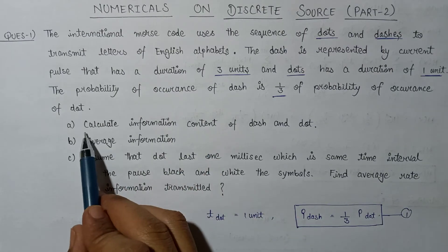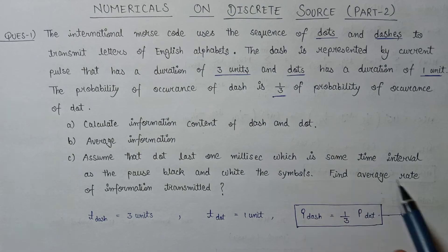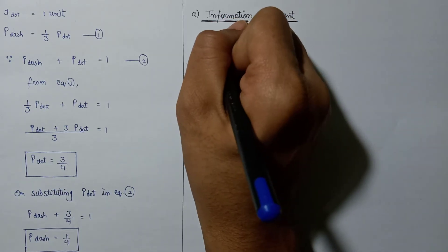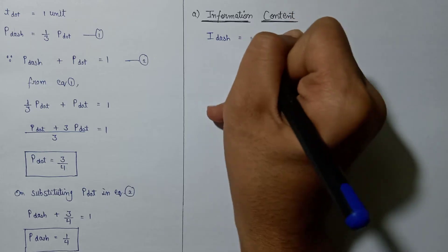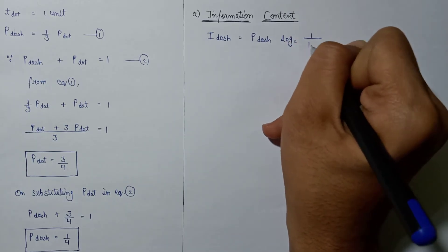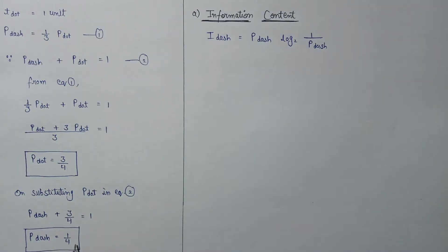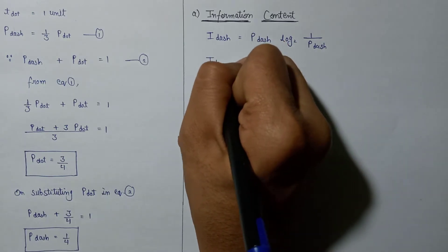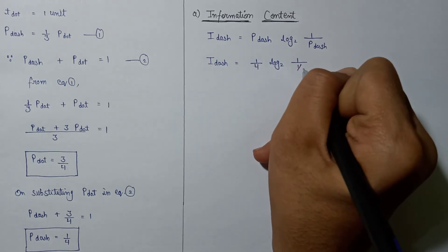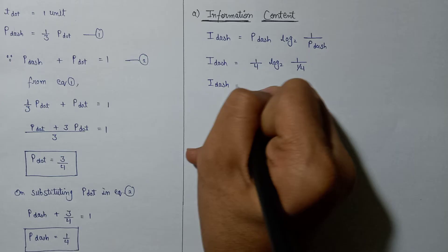Now for Part A: calculation of information content of dash and dot. The information content of dash is given as I(dash) = P(dash) × log₂(1/P(dash)). Substituting P(dash) = 1/4: I(dash) = (1/4) × log₂(4), which comes out to 0.5 bits.